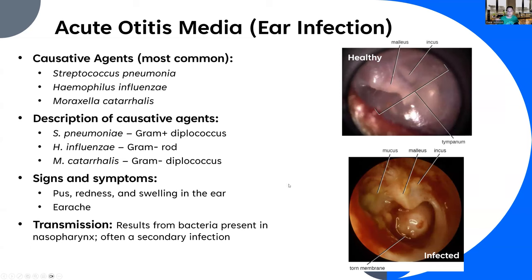Transmission: ear infections often result from bacteria present in your nasopharynx. They are often a secondary infection — you get a cold or the flu, fluid starts to accumulate, you get congested, and these three species get pushed into your sinus cavity, up into your ear, or down into your lungs. Once they're stuck somewhere they're not supposed to be, the normal checks and balances are gone, and they can overgrow — causing infection.